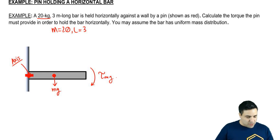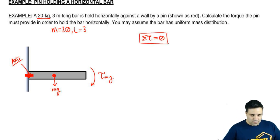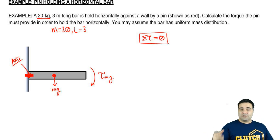So here, if we're holding it up, we're going to say that the sum of all torques equals 0 because the bar is not going to accelerate. It's not going to rotate. It's not going to have angular acceleration.